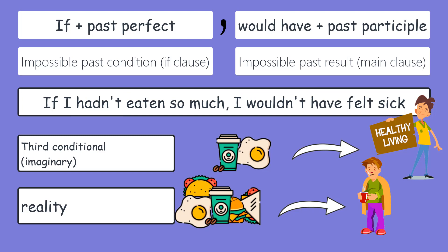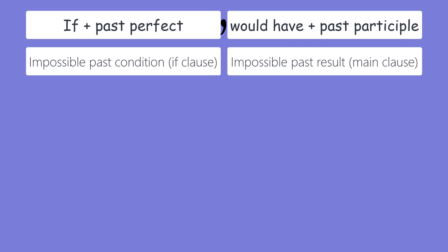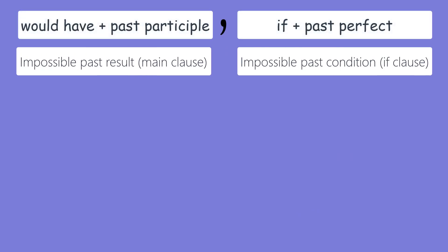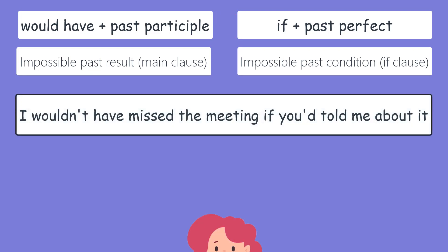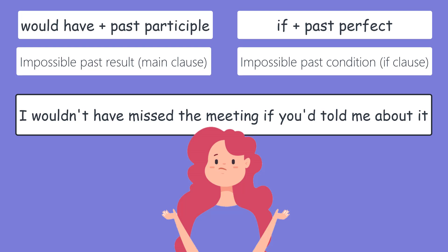The important thing about the third conditional is that both the condition and result are impossible now. As with all conditionals, you can also invert this structure: would have plus past participle, if plus past perfect. In this inverted form, there is no need for a comma. For example: I wouldn't have missed the meeting if you told me about it.